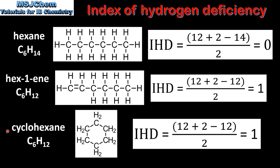Next we look at cyclohexane, which is a cyclic molecule. The index of hydrogen deficiency is (12 + 2 − 12) ÷ 2, which gives us a value of 1. This is because cyclohexane is a ring structure.